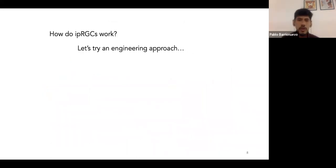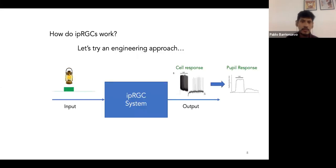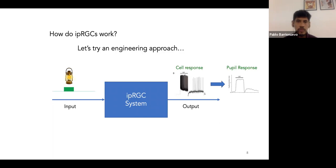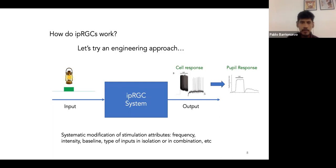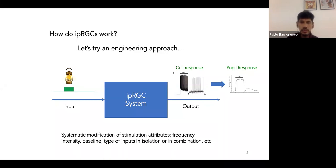I am an engineer. To tackle the question of how IPRGCs work, I tried an engineering approach together with Dr. Din Kaikau. We can model the IPRGC as a system with an input — the light stimulation — and an output — the cell response. We can monitor this output with the pupillary light response, and we can do systematic modification of the stimulation attributes: frequency, intensity, baselines, and the type of inputs in isolation or in combination.